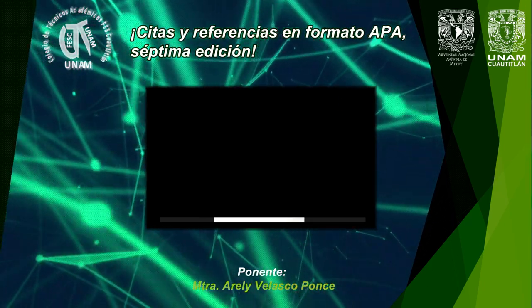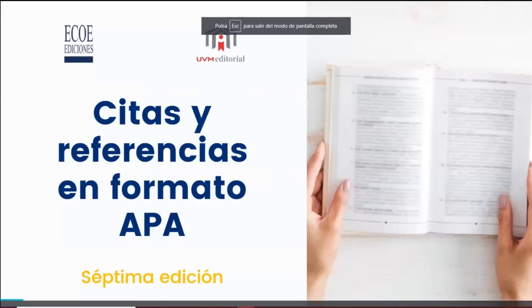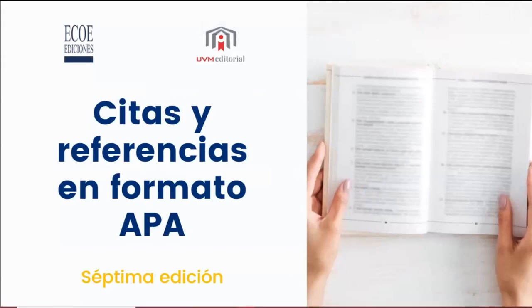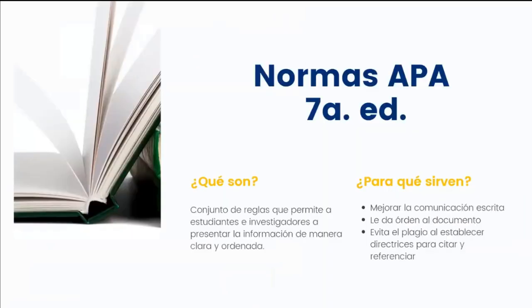Nosotros estamos queriendo enseñar acerca de las citas y referencias en formato APA. Toda esta clase está basada en la séptima edición de las normas APA. Las normas APA son un conjunto de reglas o pautas que permiten a estudiantes e investigadores presentar su información de manera ordenada. Al tener la información de manera ordenada, nos ayuda a mejorar la comunicación escrita, transmitiendo mejor nuestras ideas en formato escrito. Le damos un orden más real a nuestro documento y, muy importante, el utilizar un formato de citación nos ayuda a evitar 100% el plagio.